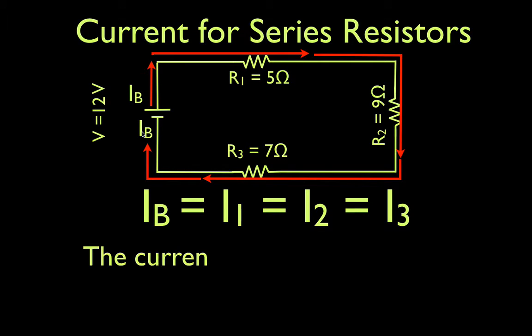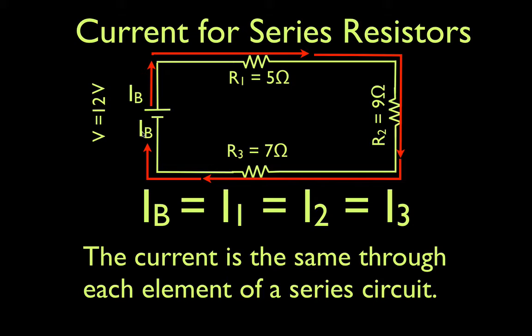So we can basically sum this rule up for current in series resistors by saying the current is the same through each element of a series circuit. That is all there is to it. Now we can actually calculate the current pretty easily because there is only one current to calculate.